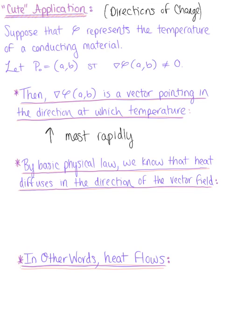That's because the gradient at that point is positive. We also know from basic physical law that heat diffuses in the direction of the vector field where temperature decreases most rapidly.